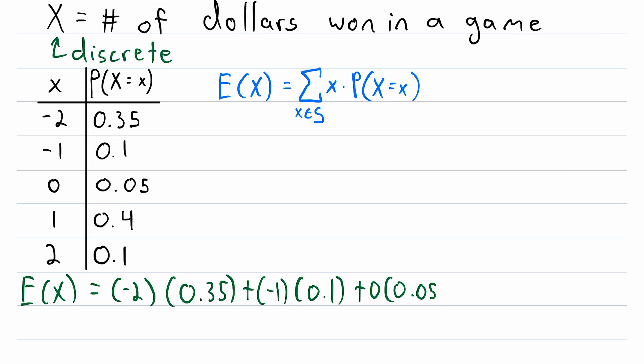plus 0, the next possible outcome, multiplied by 0.05, plus 1, the next possible outcome, times 0.4, that's its probability, and then plus the last possible outcome, which is 2, multiplied by its probability, which is 0.1.